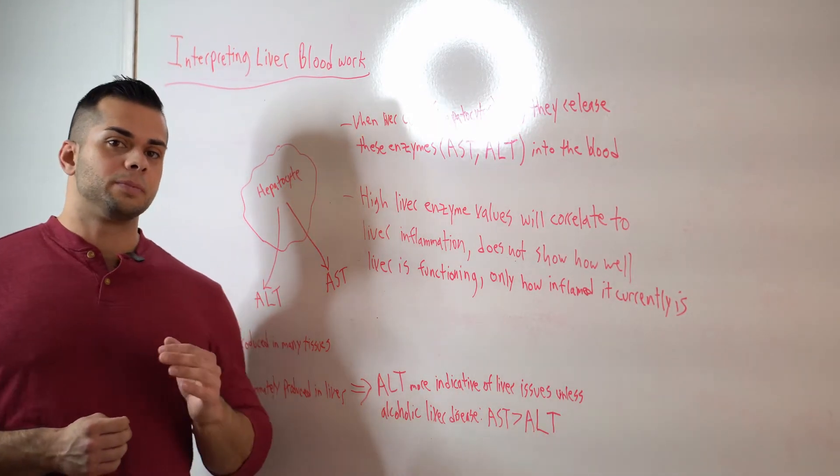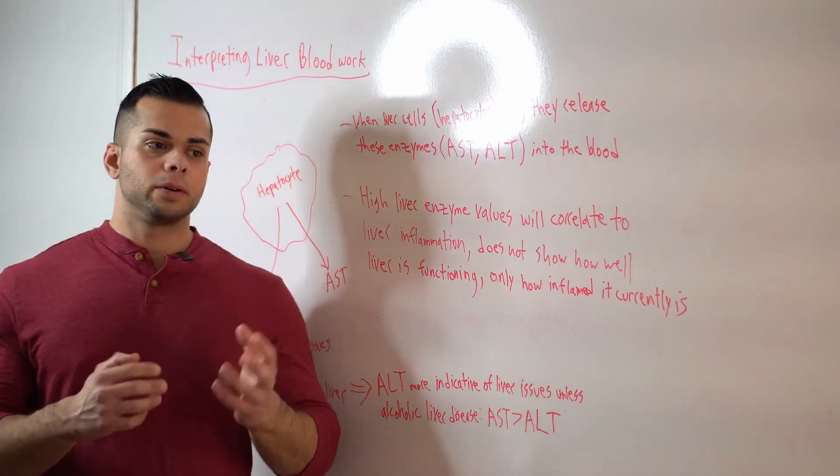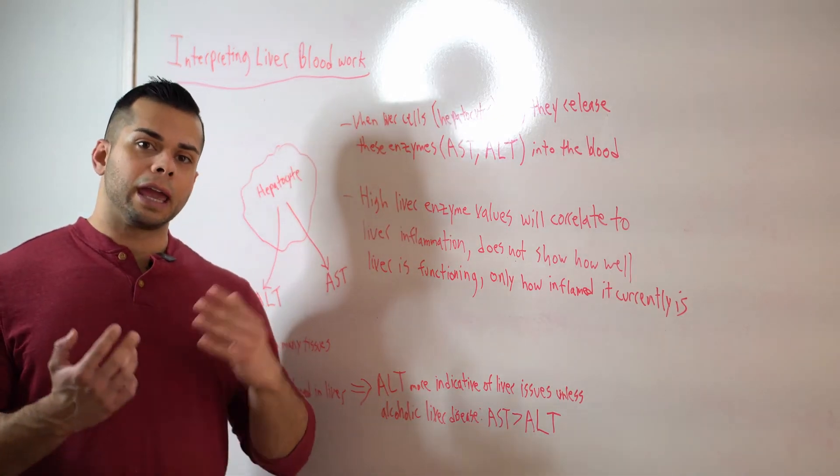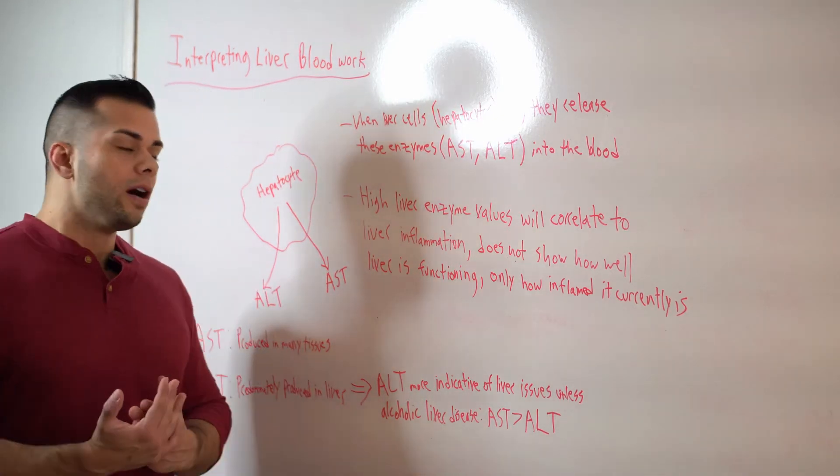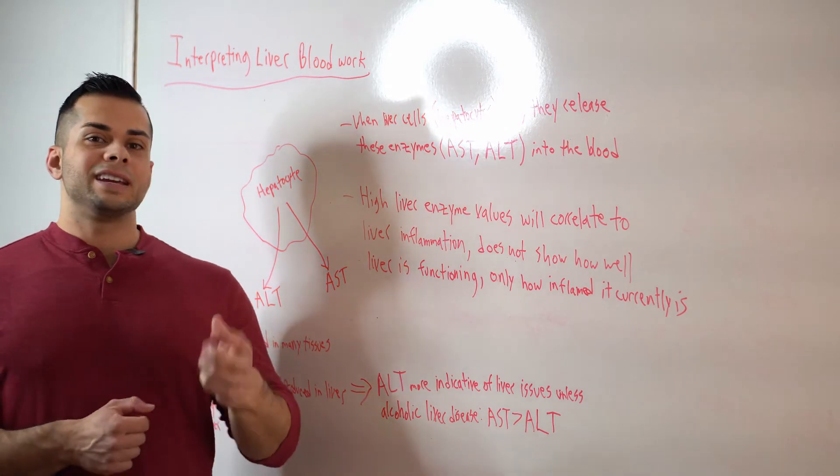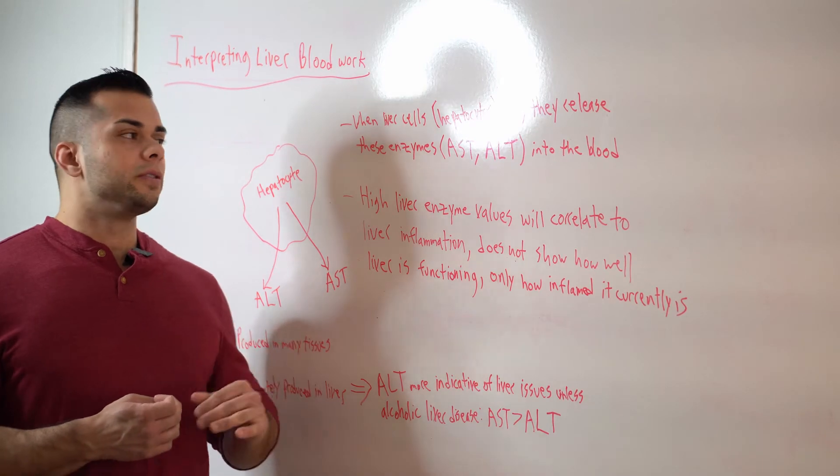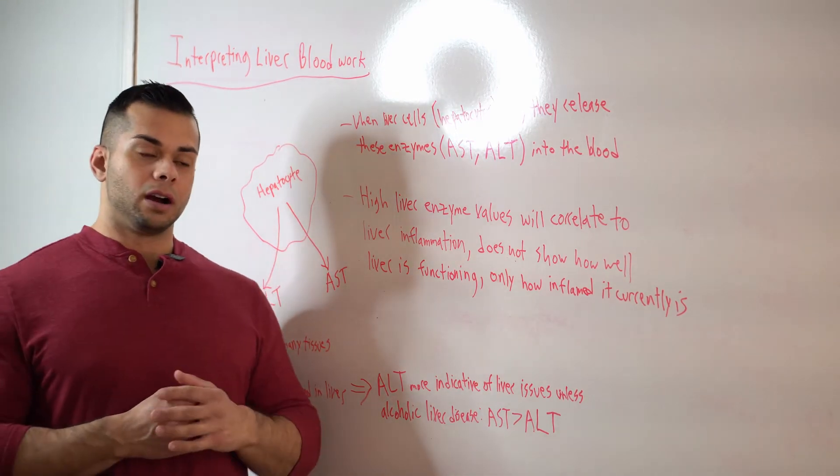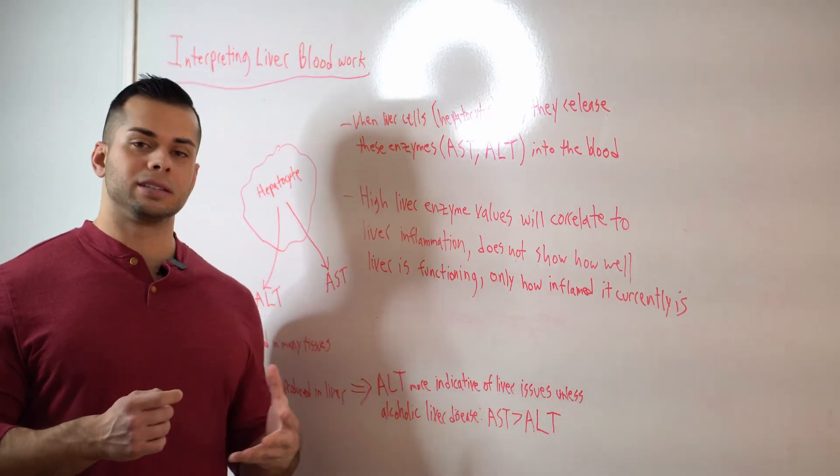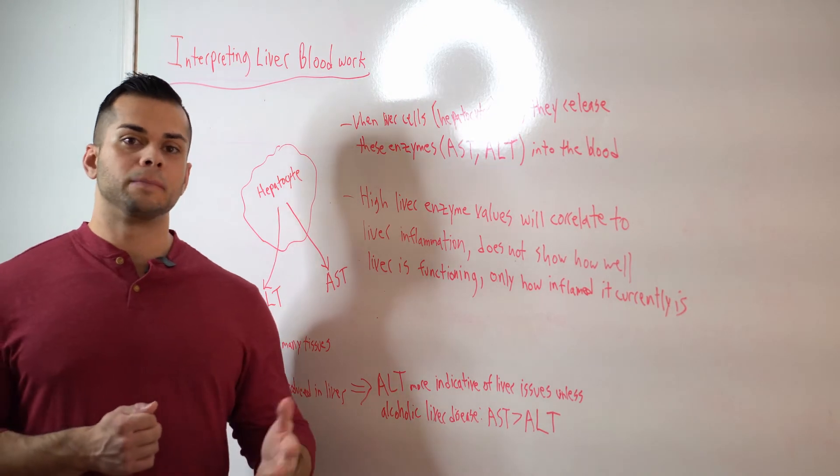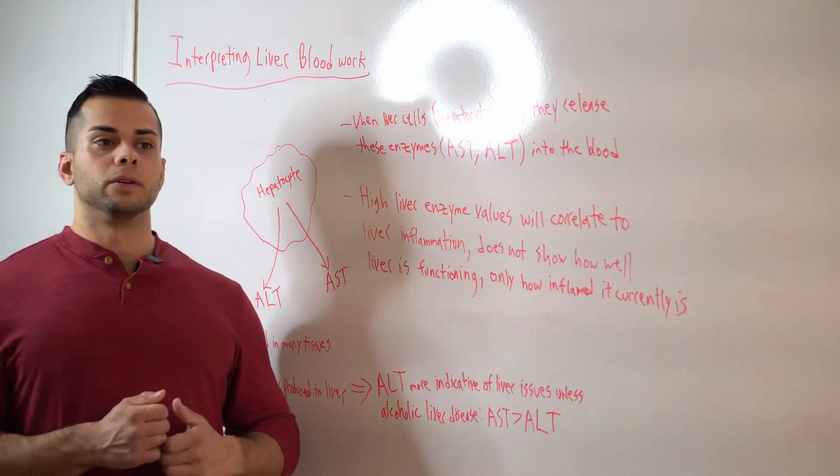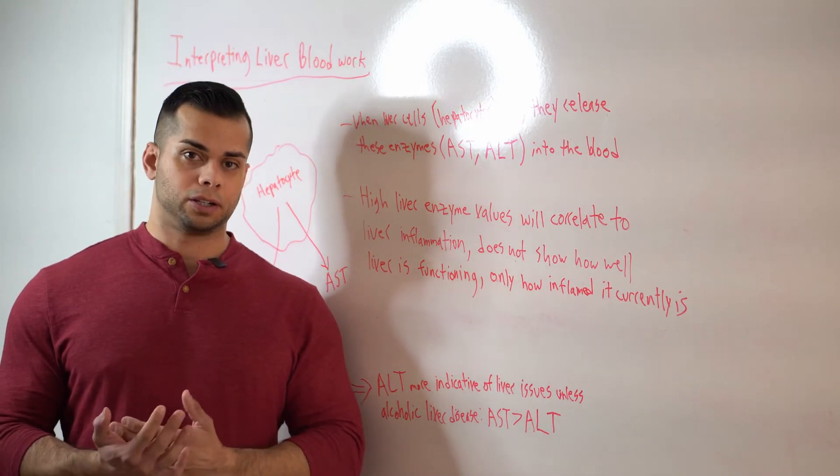And we can use an example of this by saying if we have a liver that is so damaged that it cannot be damaged any further. Technically, its AST and ALT values would be low because there's no more of the hepatocytes to die and then release these enzymes. So we're going to get a low reading. But at that point, the liver is obviously not going to be functioning properly.